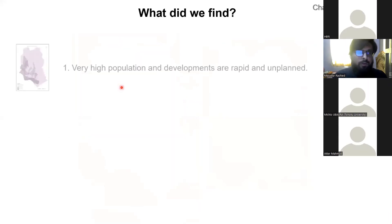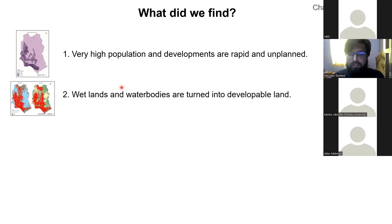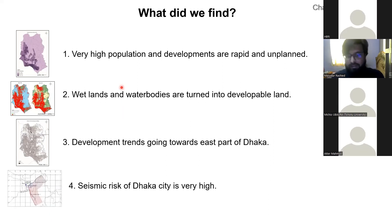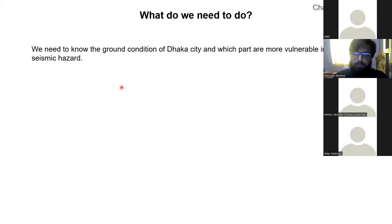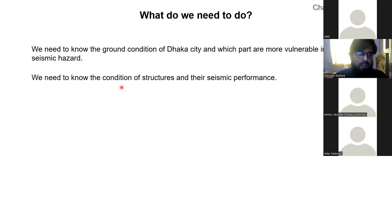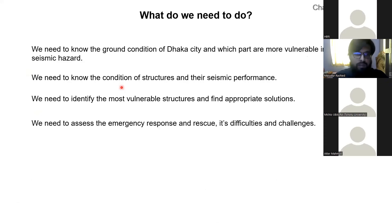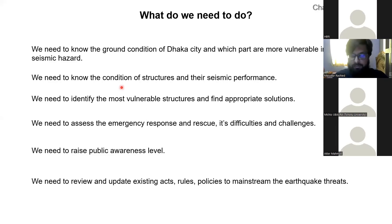So what did we find? Dhaka has a very high population, developments are rapid and unplanned, wetlands and water bodies are turned into developed lands, development trends are going towards the east, and seismic risk of Dhaka is very high. What do we need to do? We need to know the ground condition and which parts are more vulnerable to seismic hazard. We need to know the condition of structures and their seismic performance. We need to identify the most vulnerable structures and find appropriate solutions. We need to assess emergency response and rescue difficulties, raise public awareness, and review and update existing acts, rules, and policies to mainstream earthquake threats.